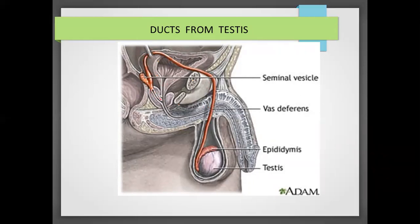The ejaculatory duct joins the urinary bladder. In this area, it is called the prostate gland. The Cowper's gland, or bulbo-urethral gland, is also situated here. The secretions from the seminal vesicle, the prostate gland, and the Cowper's gland are released into this duct, which is actually the urethra. The sperm is then passed out through the urethral opening.